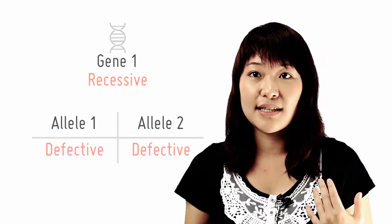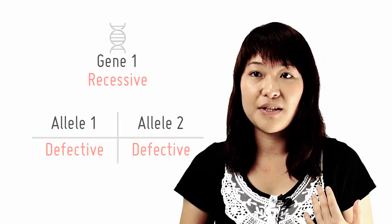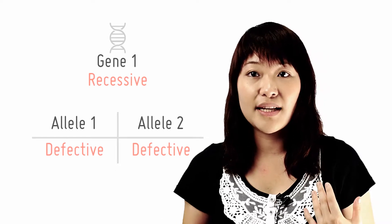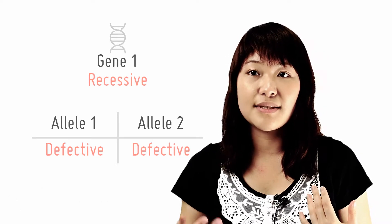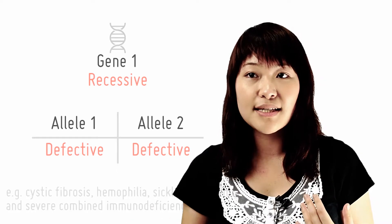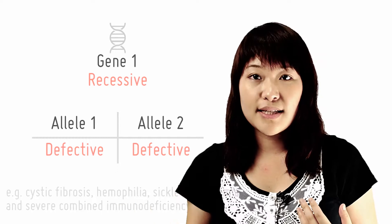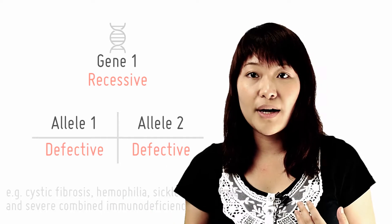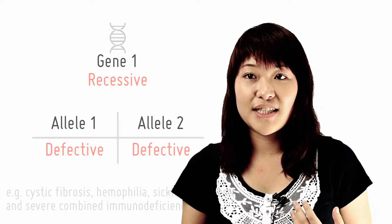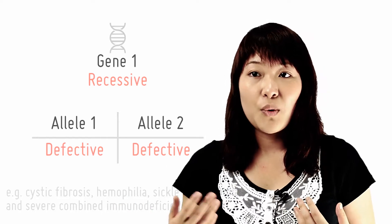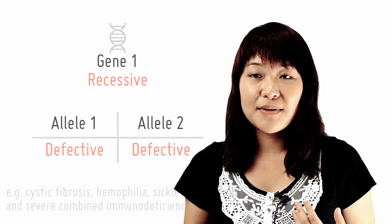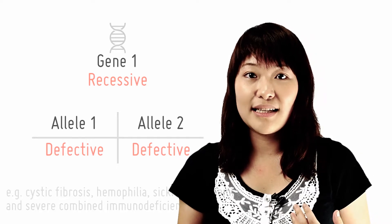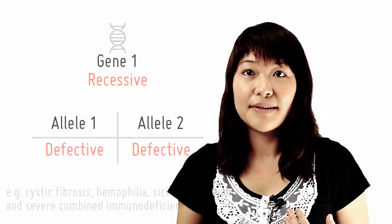Some examples of genetic diseases that can be treated by gene therapy at the moment include cystic fibrosis, hemophilia, sickle cell anemia, and severe combined immunodeficiency. We will be looking at some of these specific genetic diseases in greater detail later on.